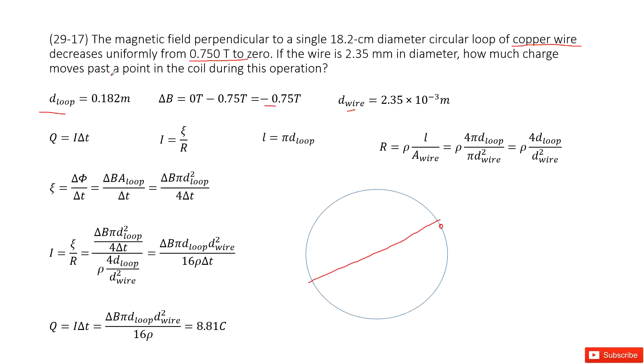Now, how much charge moves past a point in the coil during this operation? We need to find the charge that moves past one point in this loop. That means we use the current times ∆t.